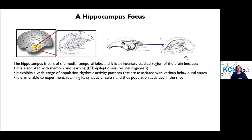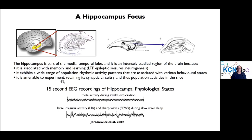Starting with the hippocampus — probably most of you know all about it — it's part of the medial temporal lobe. Here's the human version and here's the rodent version. It's intensely studied for many reasons: it's associated with memory and learning, it's one of the first places where LTP was measured, and we have a wide range of population activity patterns associated with different behavioral states. Also, if you make a slice preparation, it retains its synaptic circuitry. Here I'm showing recordings from behaving animals during awake and slow-wave sleep: in the top, rhythmic theta activity at 3 to 12 hertz, and during slow-wave sleep, large irregular activity or sharp waves.